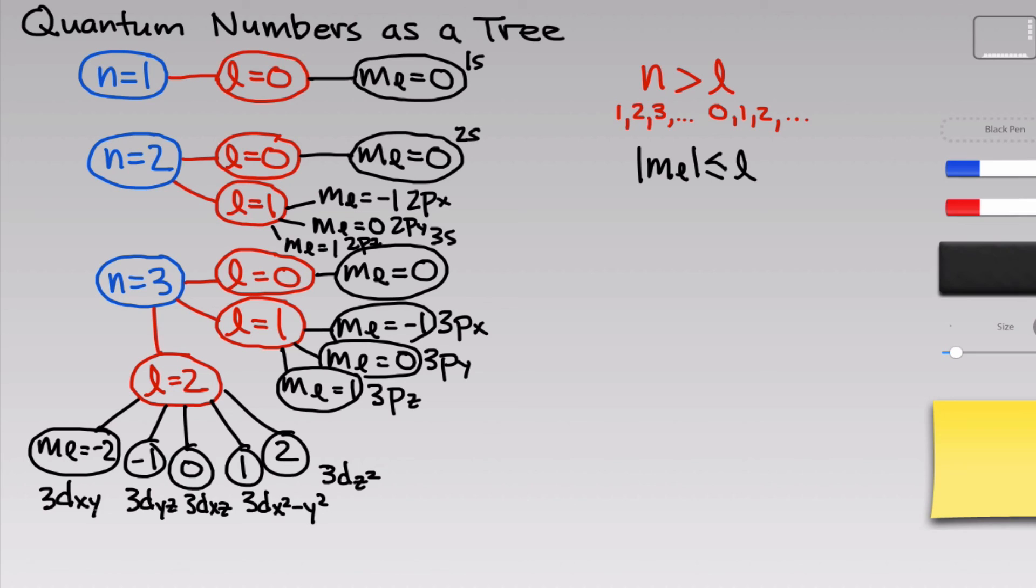notice that m sub-l is just dictating the orientation of the orbital in space and not necessarily its shape. To some small degree with the d orbitals, it does dictate shape, but mostly m sub-l is related to the direction of the orbital while its shape is dictated by the l value.